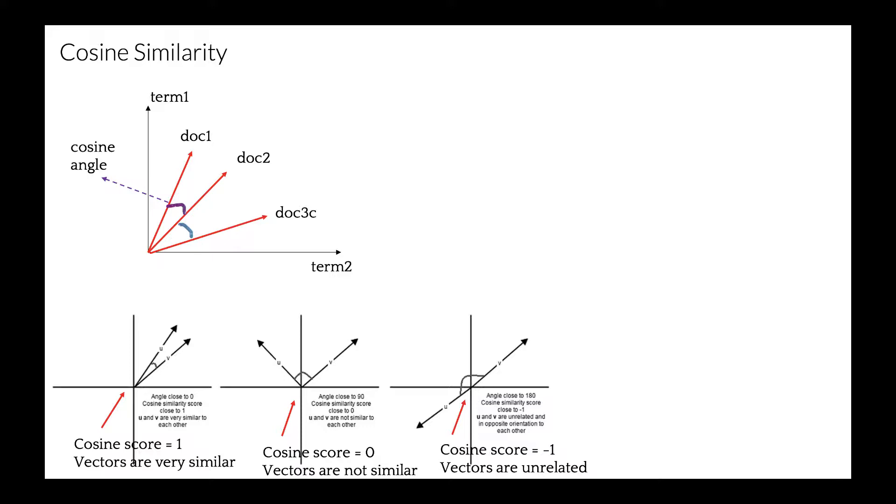The smaller the angle between two documents, the closer and more similar they are. If angle is close to zero, cosine score is close to one, and vectors are very similar. If angle is close to 90, cosine score is close to zero, and vectors are not similar.